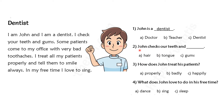Second, John checks our teeth and dash. You have to choose the answer from the passage. It says: I check your teeth and gums. So the question asked, John checks our teeth and gums. The options were hair, tongue, and gums.